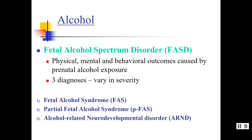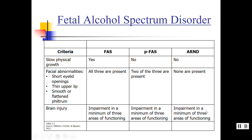With alcohol, there's actually a spectrum of diagnoses depending on how the child is affected. Fetal alcohol syndrome is the worst, followed by partial fetal alcohol syndrome, and alcohol-related neurodevelopmental disorder, or ARND. The criteria include slow physical growth, facial abnormalities, or some type of brain injury. With fetal alcohol syndrome, they have all three, whereas with ARND they may only have issues with attention or focusing.